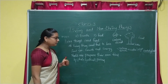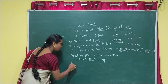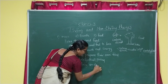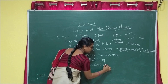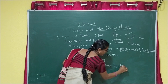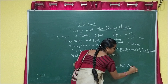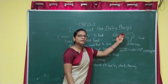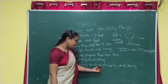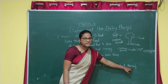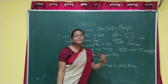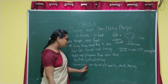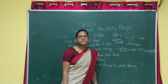Human beings depend for their food on plants and animals. For example, animals can eat plants, and plants make their own food. Human beings depend on plants and animals for food — plants means vegetables, and animals means meat, milk, and eggs. These are all food items for us.